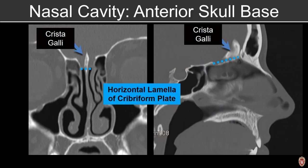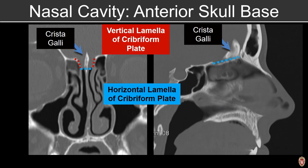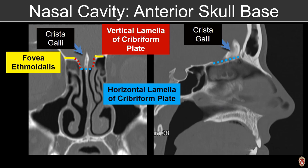The nasal septum attaches superiorly to the cribriform plate, which has two components: the horizontal lamella and the vertical lamella. The vertical lamella makes a right angle and continues on to attach to the roof of the ethmoid sinus, or the fovea ethmoidalis. Just in front of the crista galli, we can see the foramen cecum, which is an important anatomic structure, particularly in patients with craniofacial abnormalities.